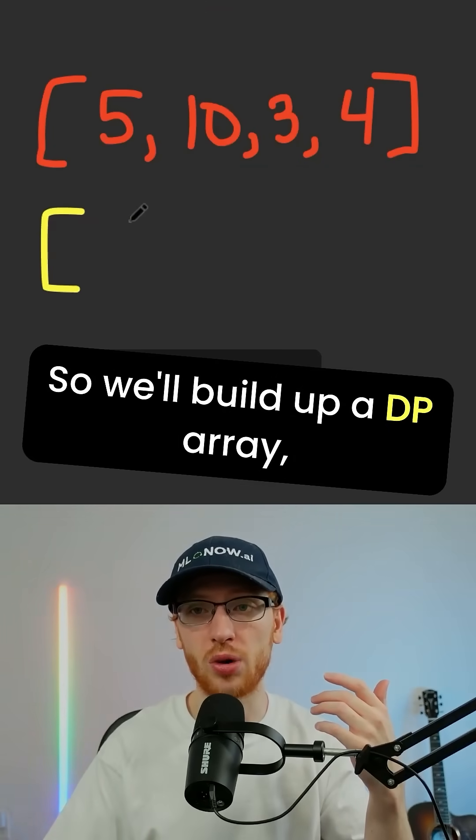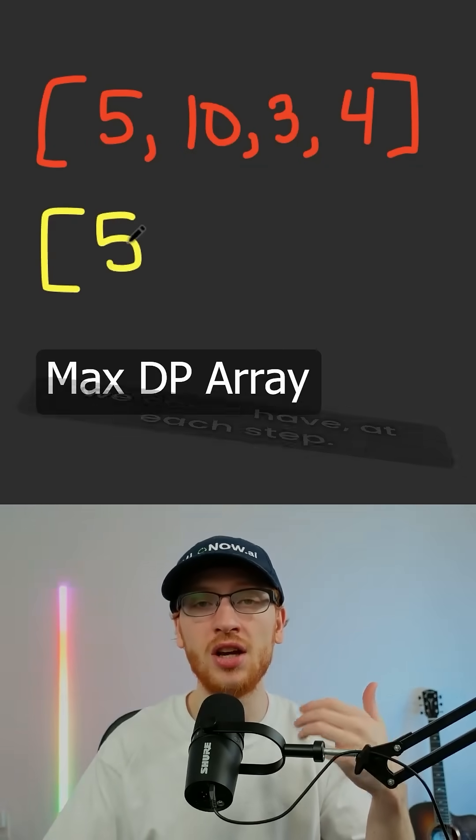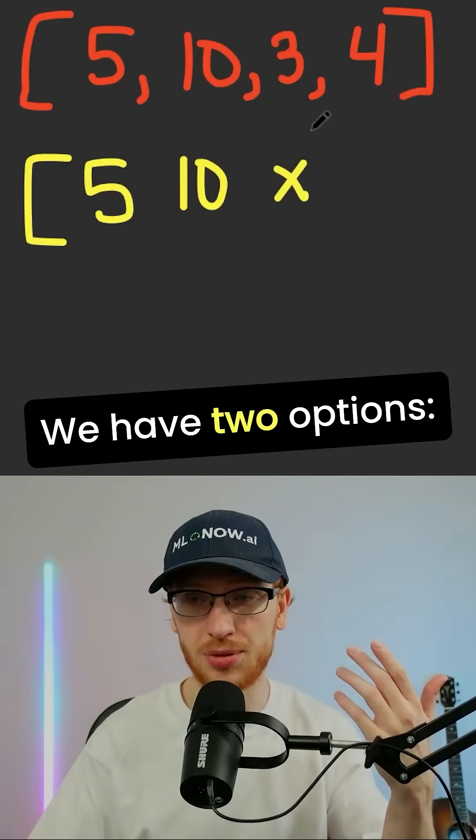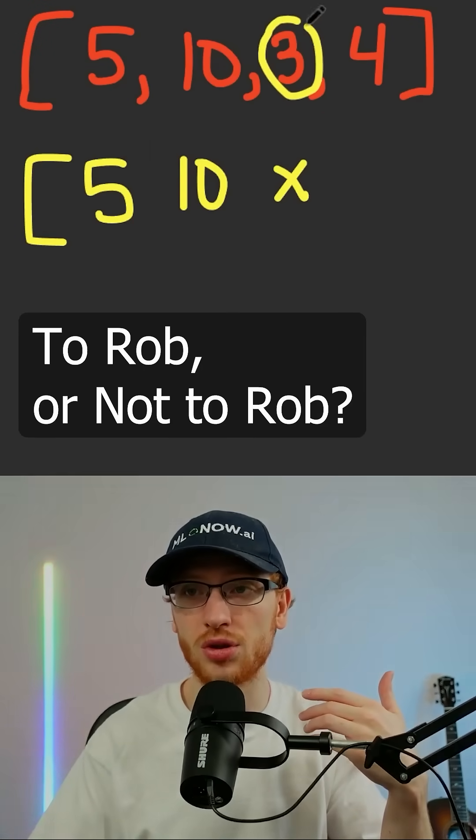So we'll build up a dynamic programming array that always has the max amount of money we could have at each step. We have two options. Do we want to rob this house or do we not?